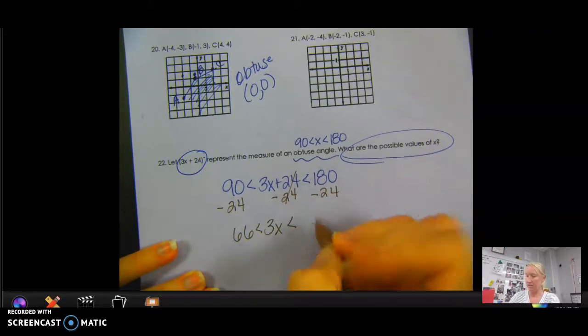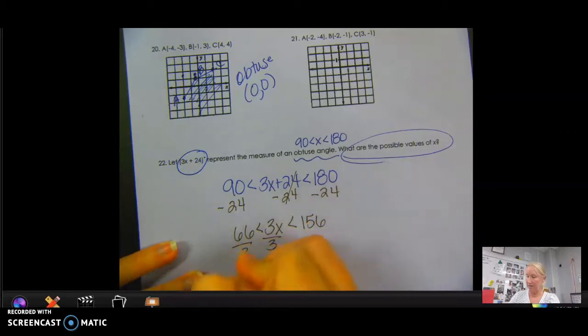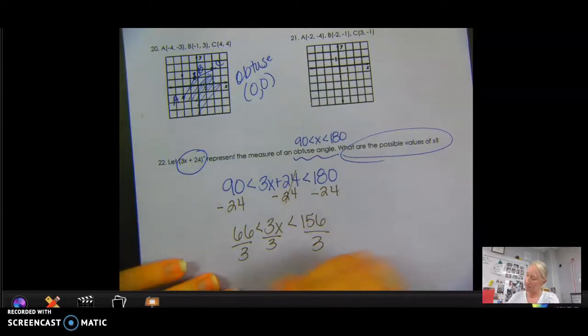We have this left in the middle because that 24 is gone. 180 minus 20 is 160. 160 minus 4 is 156. I'm going to divide by 3, but again, I have to divide it in all areas.